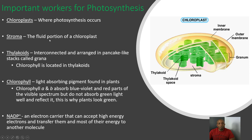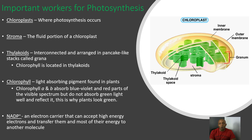Then we look at our stroma — it's the fluid portion of a chloroplast. All this fluid inside the chloroplast is our stroma. Then we move on to our thylakoids, which are interconnected and arranged in pancake-like stacks called granum. Looking over here to the right, here's our granum — these are those pancake-like stacks.